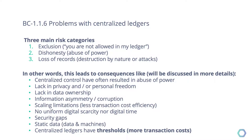The third one is loss of records. This is not only when records got hacked, but also when you got coerced — for example, somebody puts a gun to your head and says they want you to transfer dollars from person A's account to their account. There is a single entity that they can attack. And of course, natural disasters and things like that also apply. So remember these three things: exclusion, dishonesty, and loss of records.